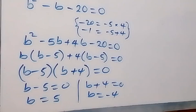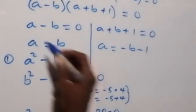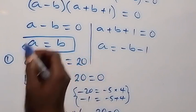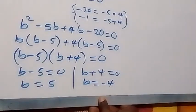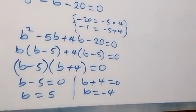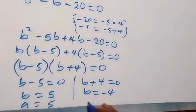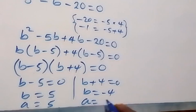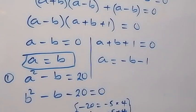This implies b equals 5 or b equals minus 4. Since a equals b, we also get a equals 5 when b equals 5, and a equals minus 4 when b equals minus 4. So the first solution is (a, b) = (5, 5) and the second solution is (a, b) = (minus 4, minus 4).